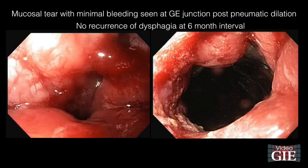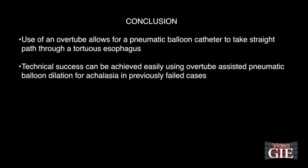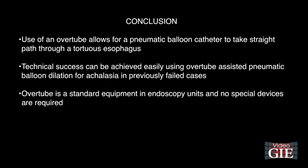A mucosal tear with minimal bleeding was seen at the gastroesophageal junction after pneumatic balloon dilation, which is expected. There was no recurrence of dysphagia at a six-month interval. In conclusion, the use of an overtube allows for a relatively rigid pneumatic balloon catheter to take a straight path through a tortuous esophagus. Technical success can be achieved easily using overtube-assisted pneumatic balloon dilation in previously failed cases. An overtube is standard equipment in endoscopy units, and no special devices are required for the technique described in this video.